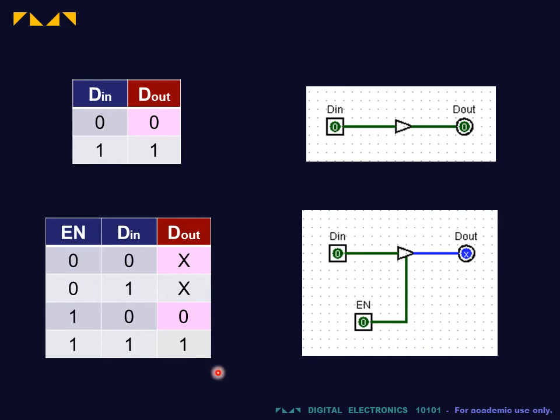This is the truth table for this buffer. When EN is 0, the gate is disabled, and Dout is in the no output mode X. When EN is 1, the buffer acts normally, and Dout is equal to Din.